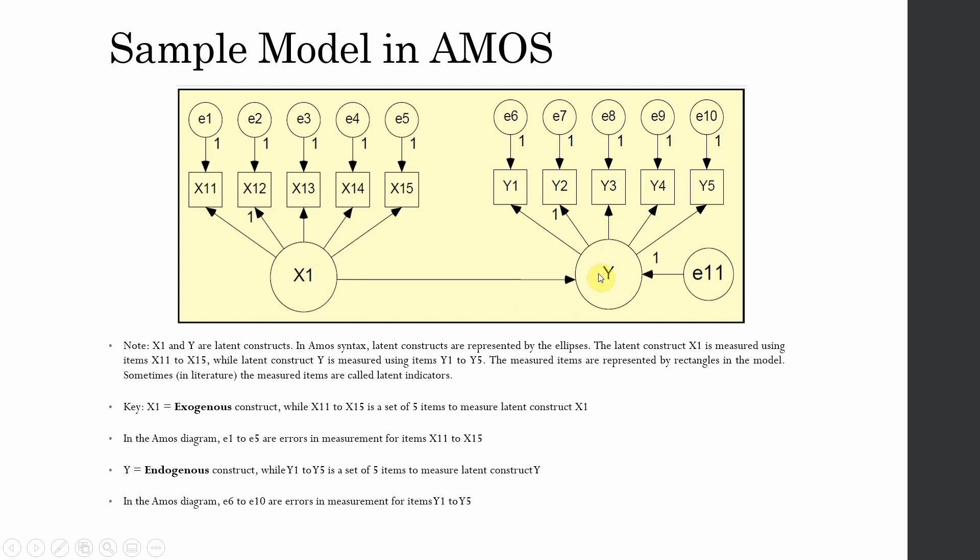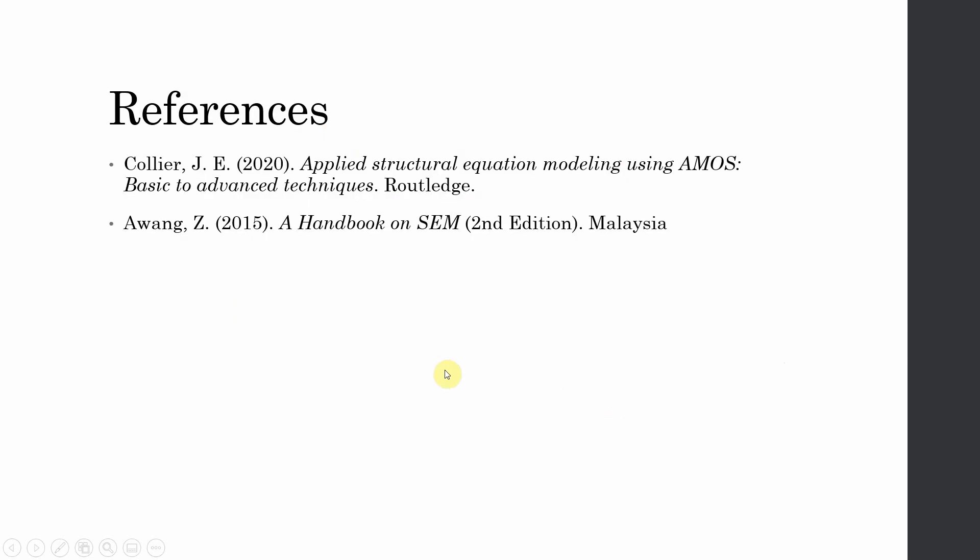These are called latent indicators because they are measuring the latent unobserved variable. This is your exogenous construct, this is your endogenous construct, and these are your error terms. Now let's look at AMOS and see how or where we get these things. If you want to know further, please refer to these books.